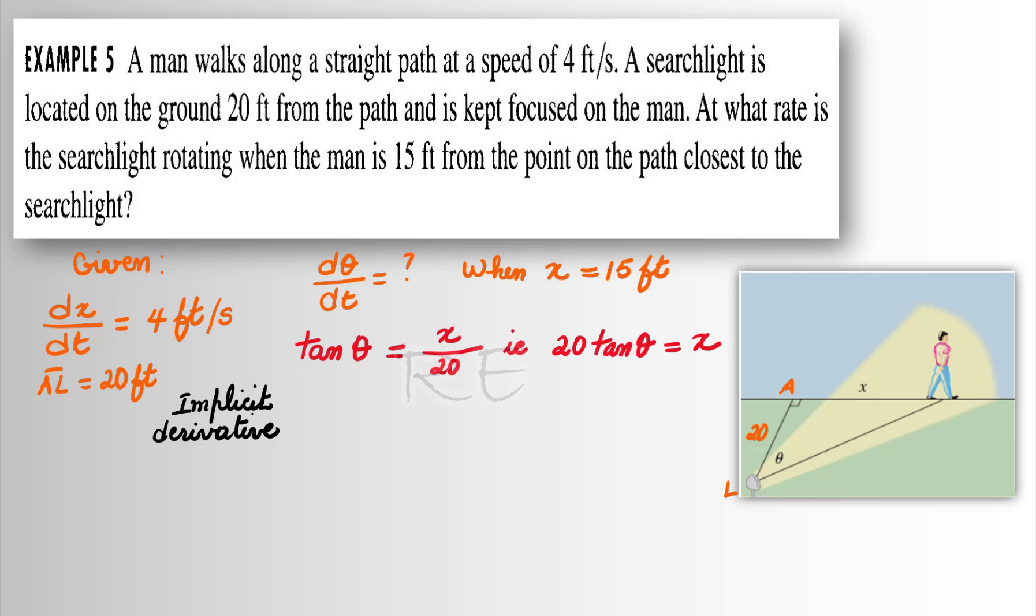Now, with implicit differentiation, we're going to get 20 sec²θ dθ/dt is equal to the derivative of x, which is 1 times dx/dt.